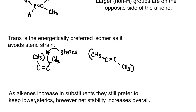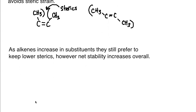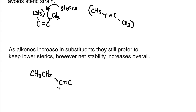It's also important to mention that as alkenes increase in substituents, they still prefer to keep lower sterics; however, net stability increases overall. So if I have something like an ethyl group on one side of a carbon-carbon double bond, and a methyl and an ethyl on the other side, we would prefer to put the methyl up on one side and the ethyl away from the other ethyl, because these are larger groups.